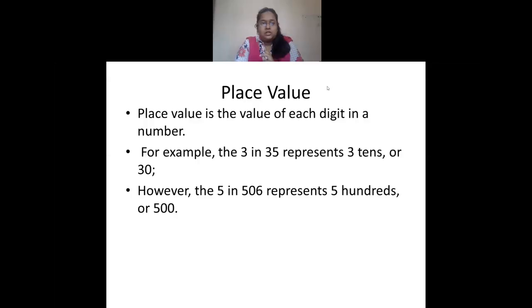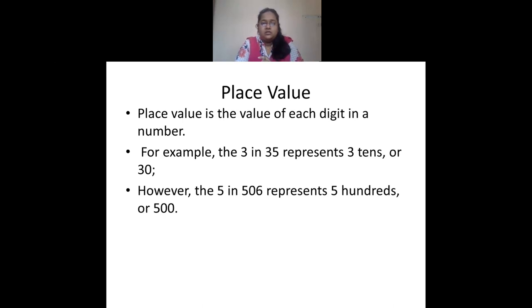Place value is nothing but the value of each digit in a number. For example, 3 in 35 represents 3 tens or 30. And in 506, 5 represents 5 hundreds because it's in the hundreds place, or 500. So here in 548, the place value of 5 is 500, 4 in the tens place is 40, and 8 in the ones place is 8.